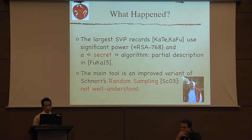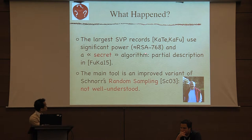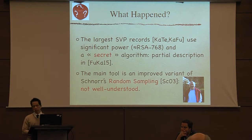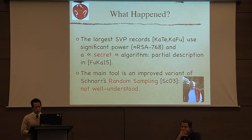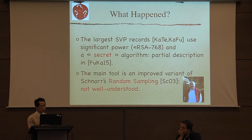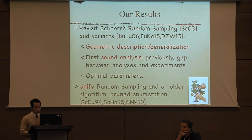If you look at the larger CSVP records, first of all, they use significant computing power — close to RSA 768, about one half the power of RSA 768. They use a secret algorithm for which you can find only a partial description in a paper published in 2015 by Fukase and Kashiwabara. If you read the paper, it seems the main tool is an improved variant of an old algorithm due to Schnorr called random sampling, invented in 2003. Unfortunately, this algorithm is not so well understood.